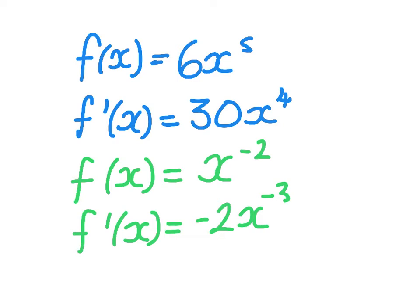Now you should remember from your index rules that I can express that as a positive index by popping it underneath the fraction. Negative 2x to the power of negative 3 is the same as negative 2 over x cubed.